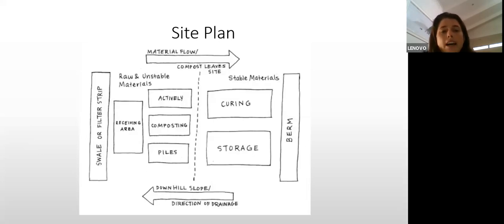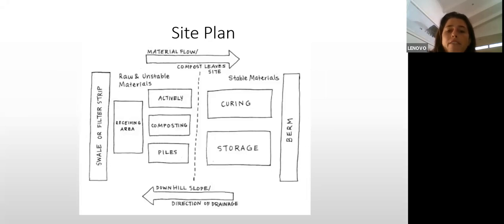Finally, select, collect, and manage your feedstock. In a basic site plan, raw and unstable material comes in on the left to a receiving area, then goes into actively managed compost piles, and then is cured and stored once stable. You never want to mix stable material with unstable material. Once it's stable, it can be sold or used in the garden.